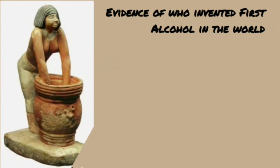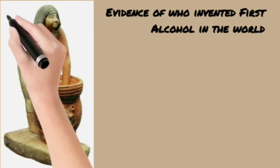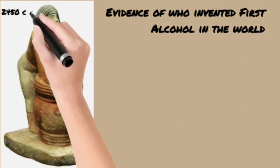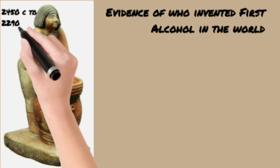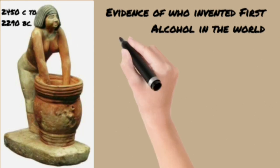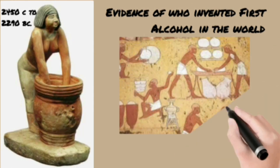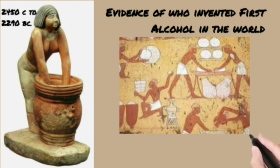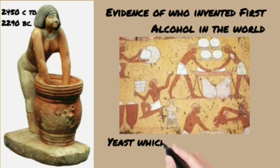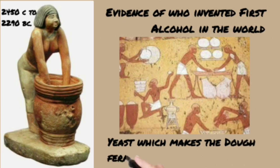You can see an image of a woman at a mixing tub making beer, dated from 2450 BC to 2290 BC. The ancient Egyptians used fermented grains to make prototype forms of beer. These grains also enabled them to refine techniques for producing raised breads, as beer sediments full of live yeast made dough fermentation quick and easy.